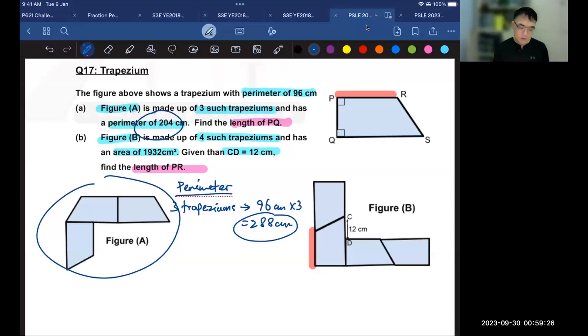The answer is that some of the lines which we are counting in 288 are inside the figure, and it does not count as part of the perimeter of figure A. So where are the lines that are inside the figure? And how many lines are there?